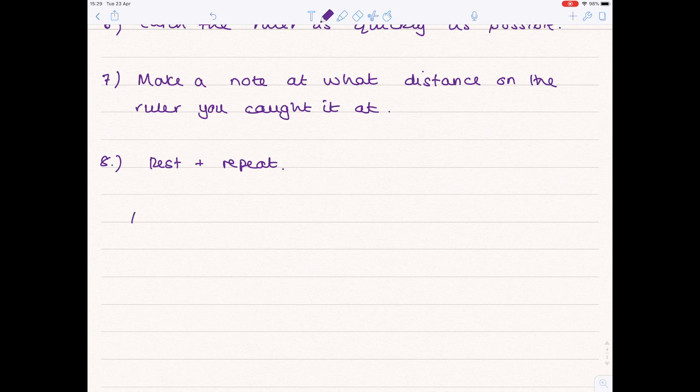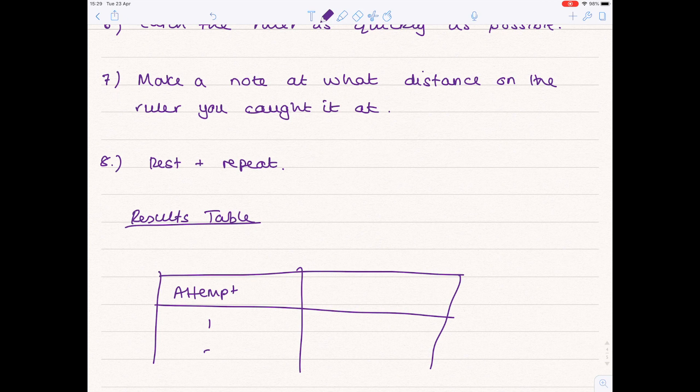So if we look at a results table, here's going to be your attempt number, so attempt one, two, three, and this is going to be the distance on the ruler in centimeters. So you might find that you weren't very good with your first attempt so you didn't catch it until 10 centimeters of the ruler had passed. You got slightly better with attempt two at eight centimeters and even better at attempt three at six centimeters.